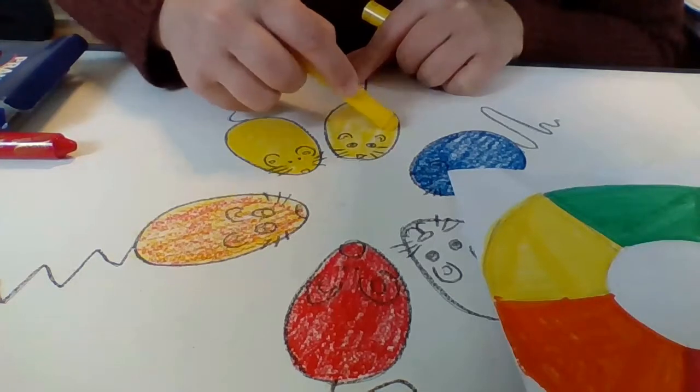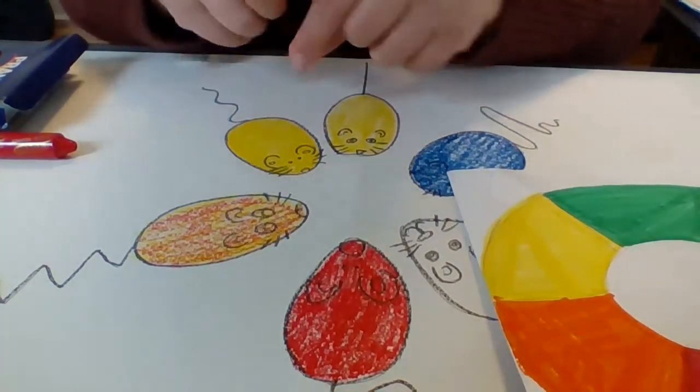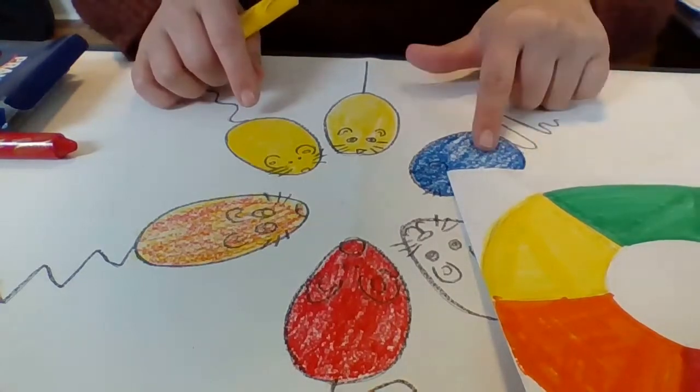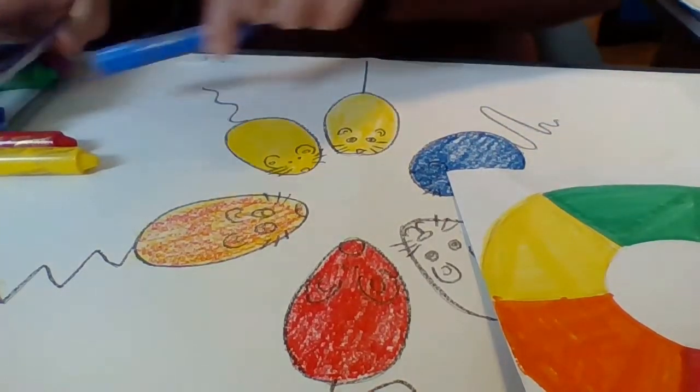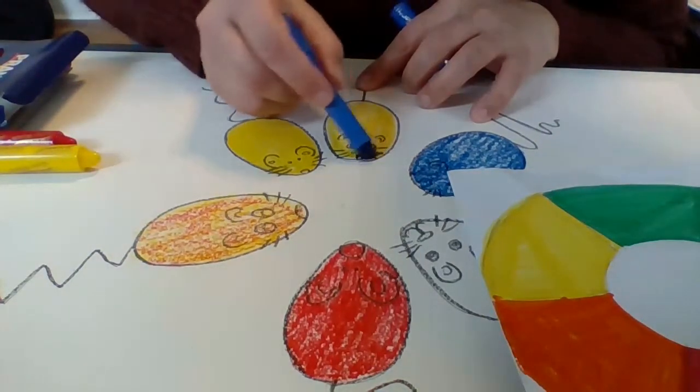Then I'll put yellow away and I'll get out my blue. I'll add a little bit of blue on top to start mixing my green.